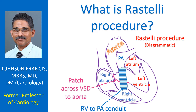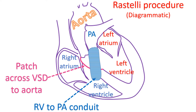The Rastelli procedure is performed in cases of transposition of the great arteries with ventricular septal defect and left ventricular outflow tract obstruction, where an arterial switch is not feasible. It was first described by G.C. Rastelli in 1969.